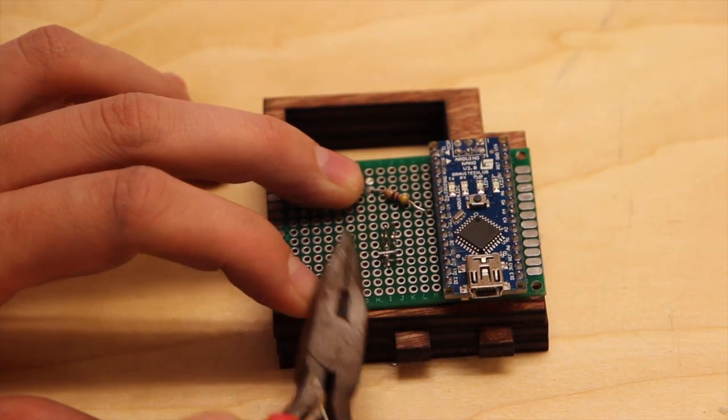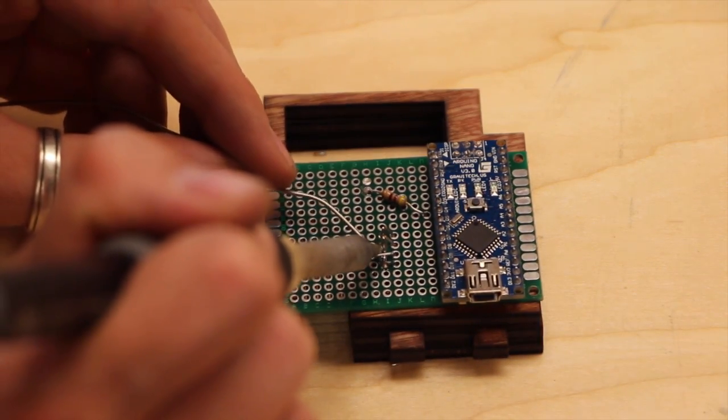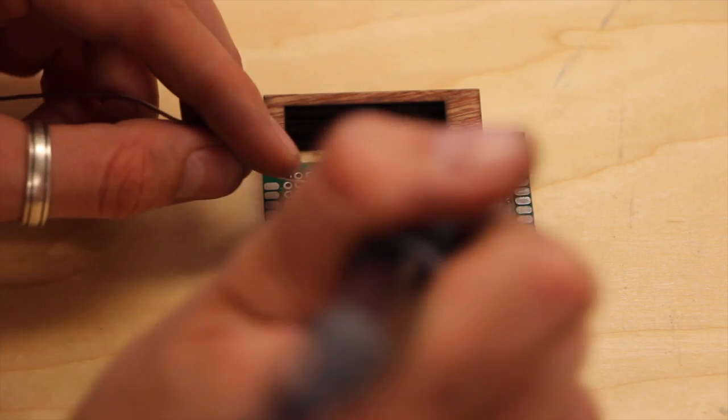SDA should be soldered to Analog 4, SCL to Analog 5, 5 volts to VCC, and ground to ground.